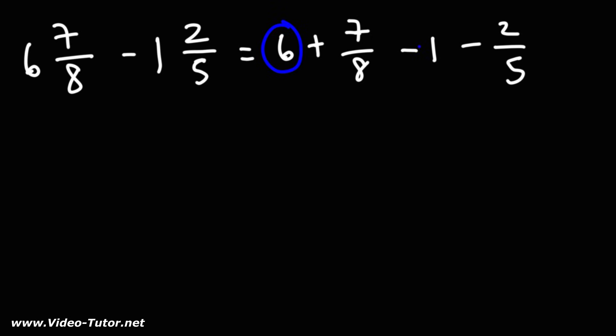Now let's combine the whole numbers. 6 plus negative 1, or 6 minus 1, is 5. So we have 5 plus 7 over 8, minus 2 over 5.